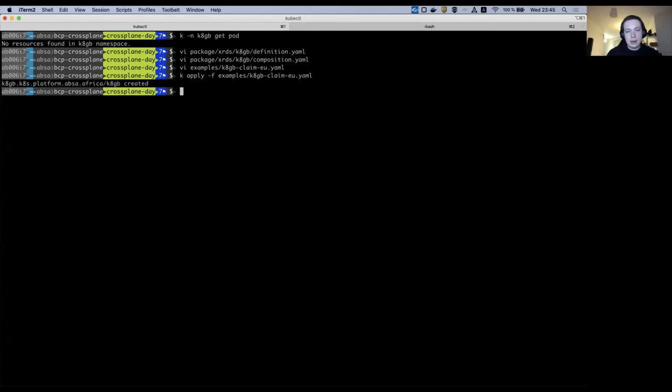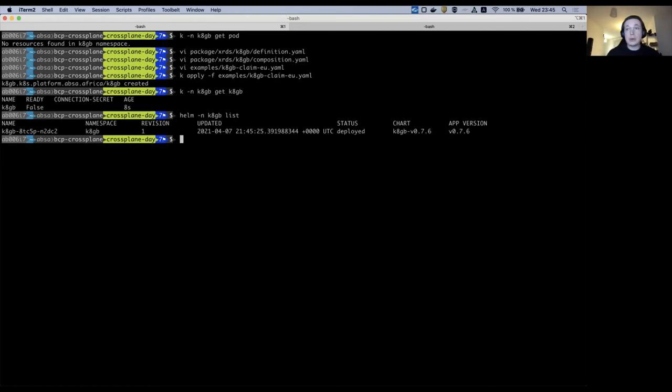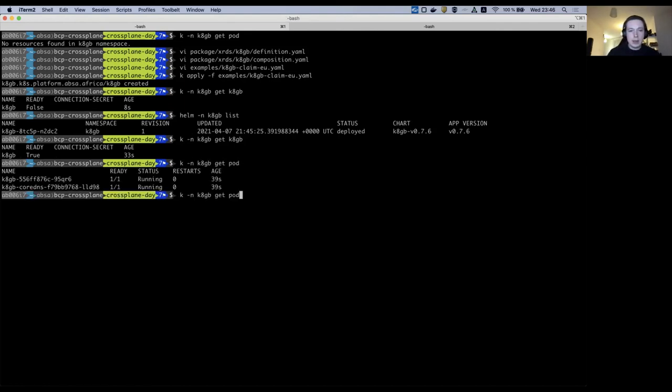And we can check the status of the abstracted resource with the standard kubectl commands. It's not yet ready. Meanwhile we can check and demonstrate what's under the hood, the standard Helm release, thanks to Crossplane provider Helm. We can check the abstracted resource again. It should be already ready. And it's true and we can quickly check the pods and the service. And let's quickly describe this pod and double check that the environment variables were properly propagated down to the pod configuration. And here we go. Cluster GeoTag as expected labeled as Europe.